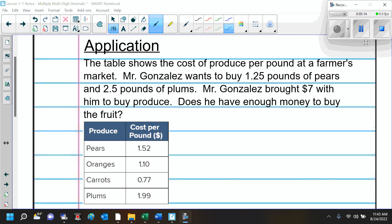This next example is the application. It says, the table shows the cost of produce per pound at a farmer's market. Mr. Gonzalez wants to buy 1.25 pounds of pears and 2.5 pounds of plums. Mr. Gonzalez brought $7 with him to buy produce. Does he have enough money to buy the fruit? And then you're going to use this table. Pears cost $1.52. Oranges $1.10. Carrots, $0.77. And plums are $1.99.